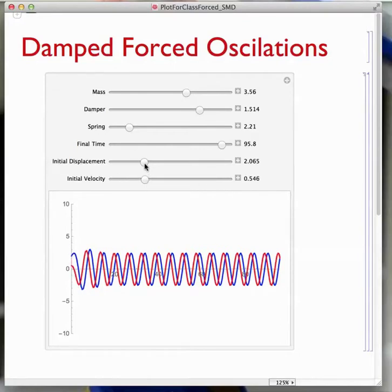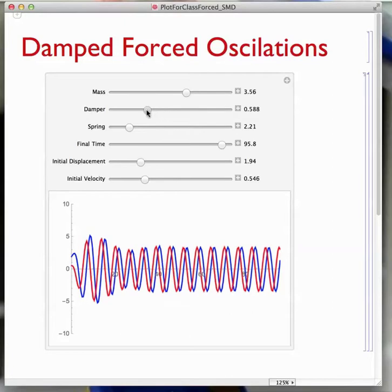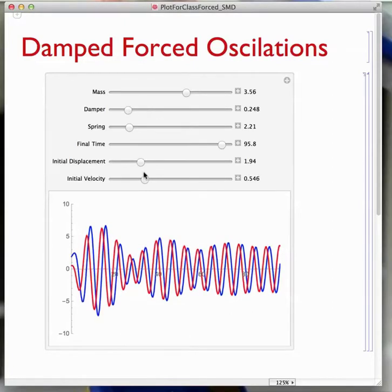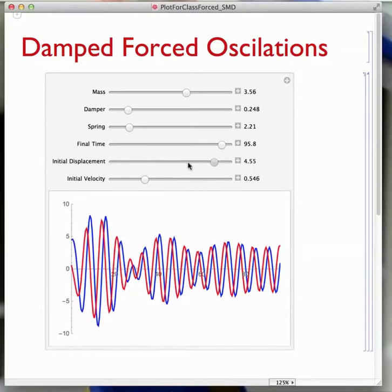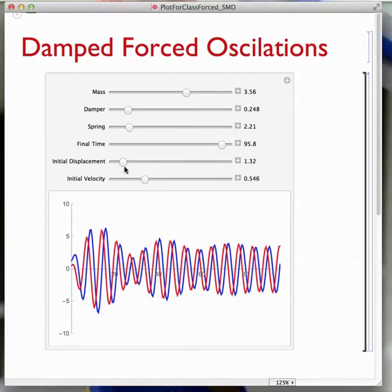It's hardly moving anything downstream. Now, if I move the dampening down, now I get more of an influence downstream from the initial conditions, and that transient regime is larger.